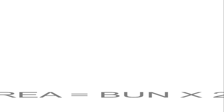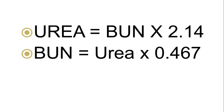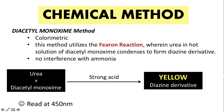To compute urea from BUN, multiply by 2.14. To compute BUN from urea (direct urea measurement), multiply by 0.467. For the chemical method of urea determination, we have the diacetyl monoxime method — a colorimetric technique utilizing the Fearon reaction. Urea in the sample (serum, plasma, or urine) together with a hot strong acid solution and the reagent diacetyl monoxime condenses to form a diazine derivative that is yellow in color. Color intensity is directly proportional to urea concentration, measured at 450 nanometers. Ammonia can cause interference with this method.